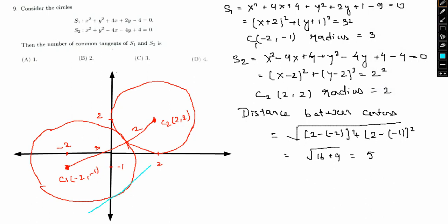Another common tangent would go from here to here, 2, and another common tangent would go from here to here. So 3 common tangents is what we will have from the figure itself. So 3 is the correct answer.